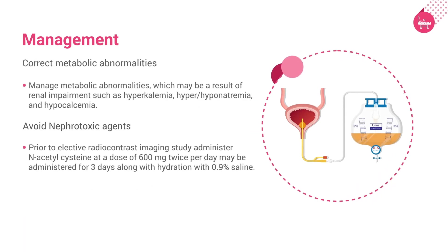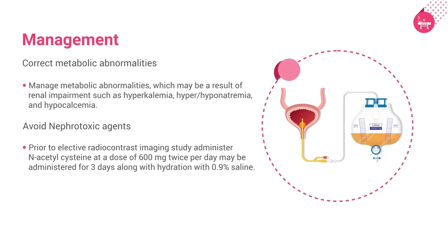Correct metabolic abnormalities. Manage metabolic abnormalities resulting from renal impairment, such as hyperkalemia, hyper- or hyponatremia, and hypocalcemia. A high urea-to-creatinine ratio is suggestive of volume depletion, gastrointestinal bleeding, catabolic state, or high protein feed. A high creatinine-to-urea ratio is associated with rhabdomyolysis or may indicate chronic kidney disease (CKD). If rhabdomyolysis is suspected, maintenance of urinary pH above 7 by systemic alkalization is indicated.